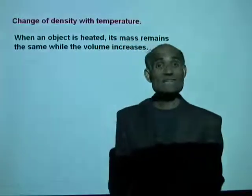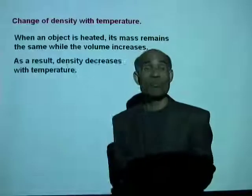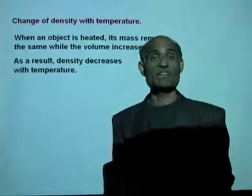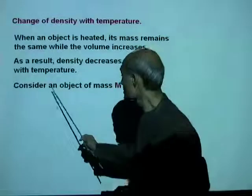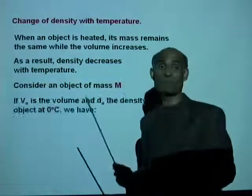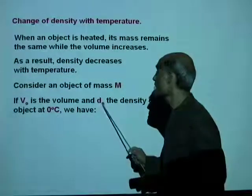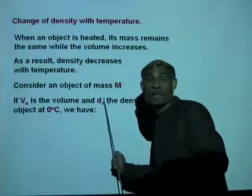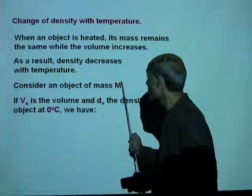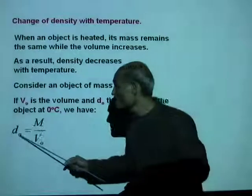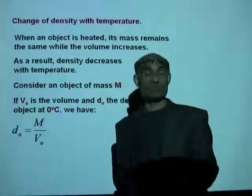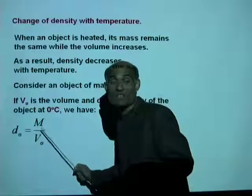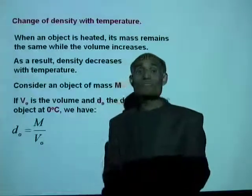When an object is heated, its mass remains the same while the volume increases, and as a result, there will be a decrease in density as the temperature increases. Consider an object of mass M. If V₀ is the volume and D₀ the density of the object at 0°C, we can write D₀ equal to mass divided by volume. The density at 0 degrees Celsius is its mass divided by its volume at 0 degrees Celsius.